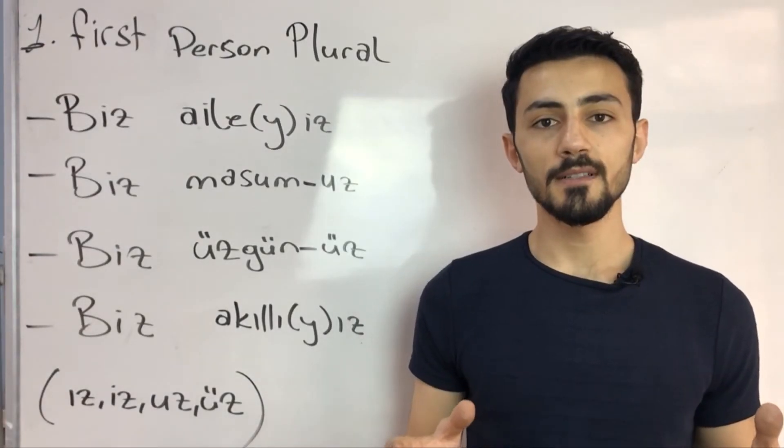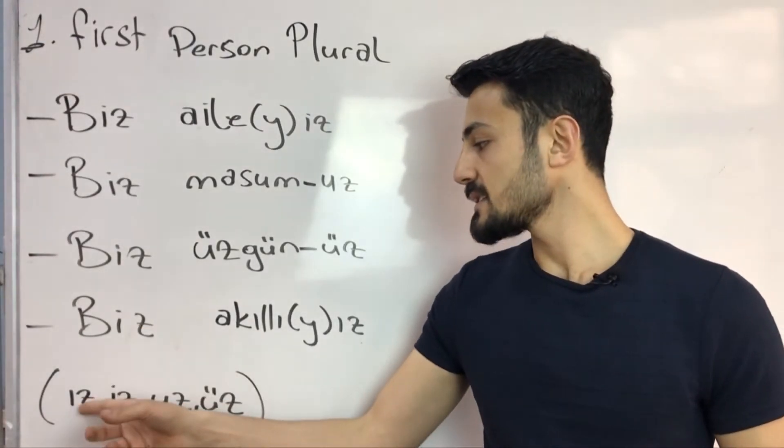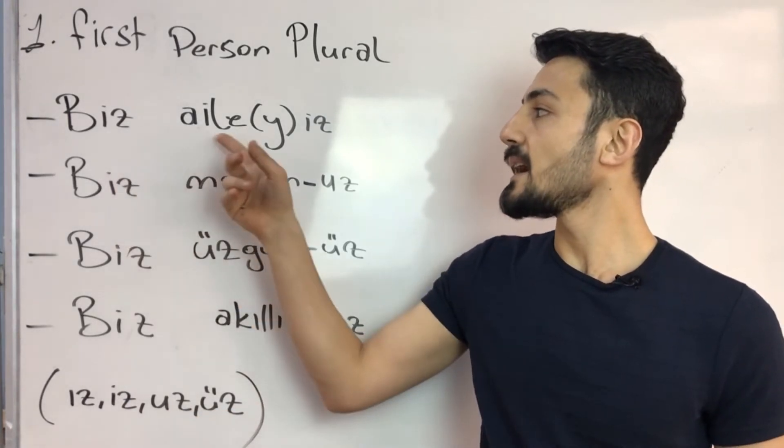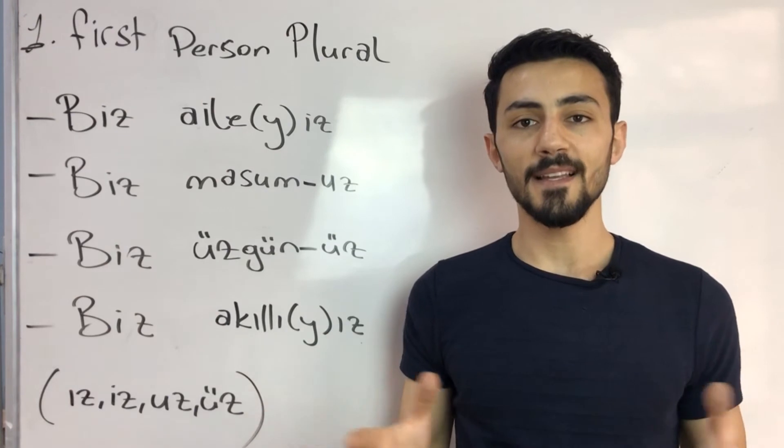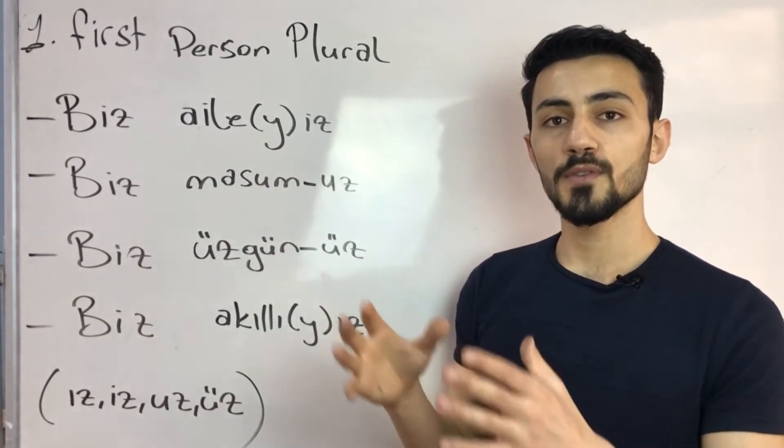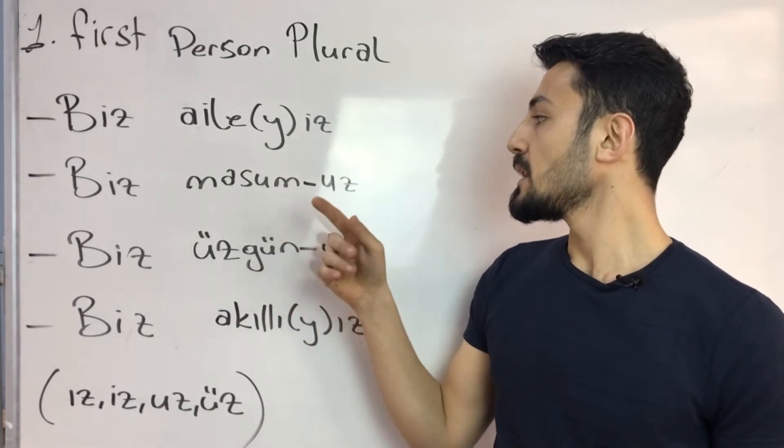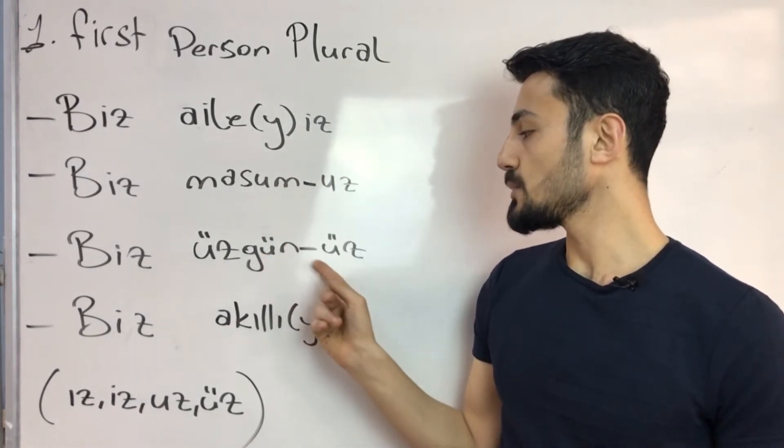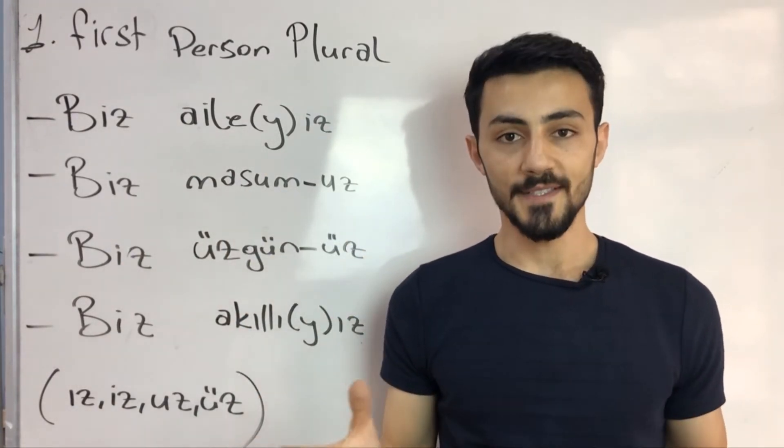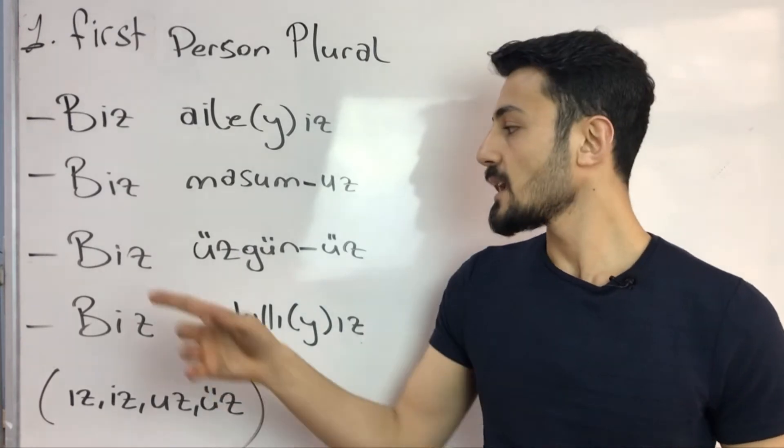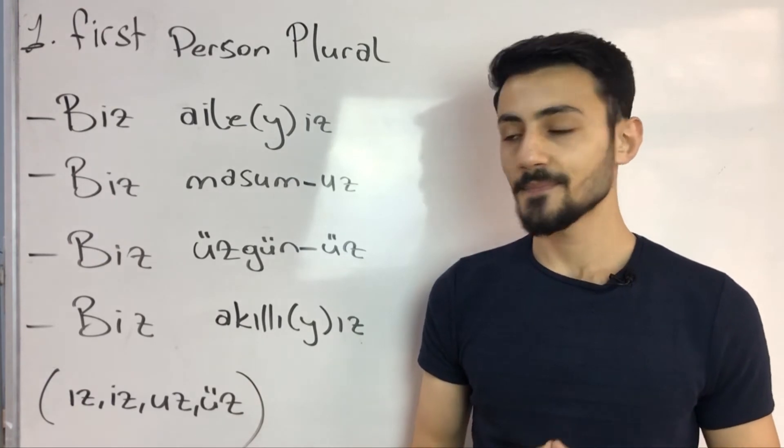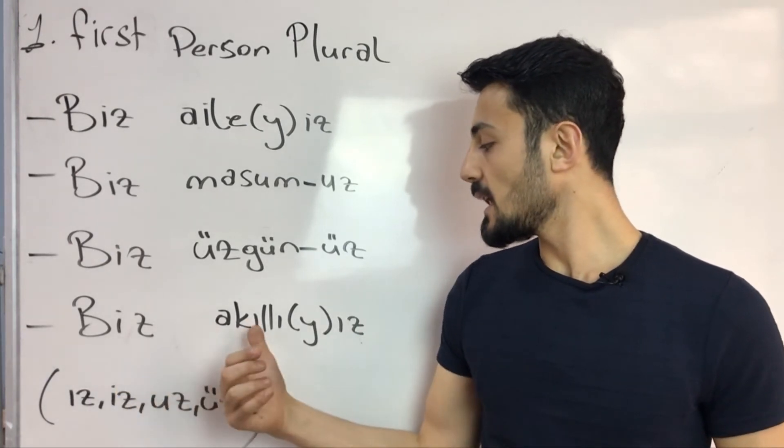First person plural, the suffixes are ız, iz, uz, üz. Biz aileyiz - We are family. Remember why we put here y sound, because we don't put two vowels together, e and i. Biz masumuz - We are innocent. Biz üzgünüz - We are upset. Biz akıllıyız - We are clever.